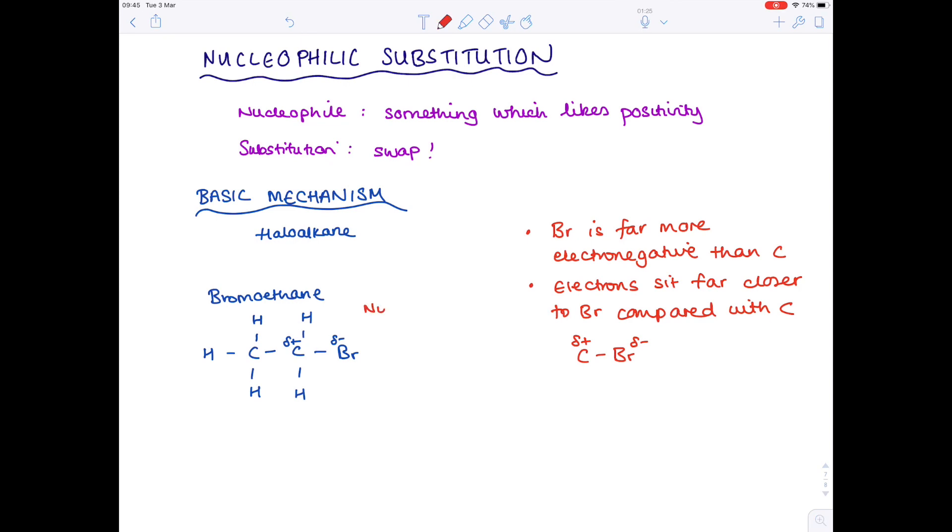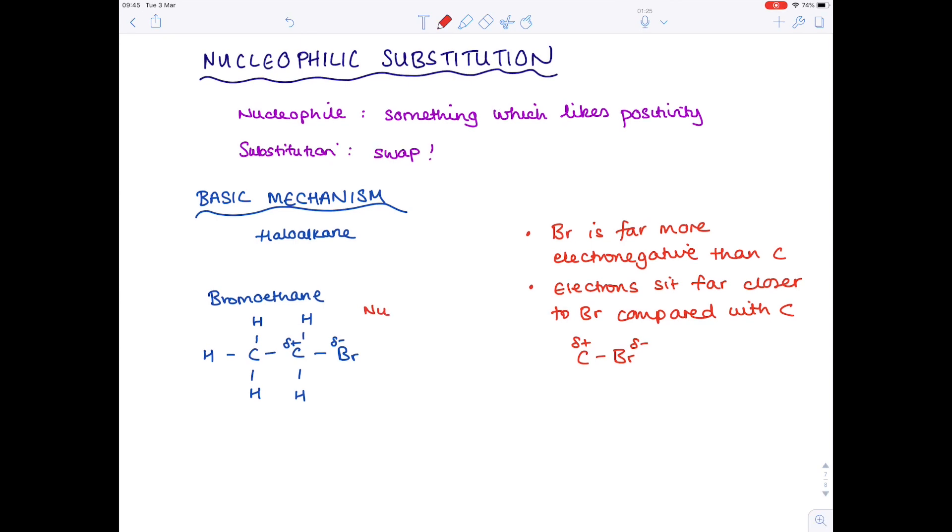So here's a generic nucleophile, haven't named which one, has a lone pair as always, and that's going to attack with a curly arrow at the carbon. And so because that slightly positive carbon accepts the lone pair from the nucleophile, what is the nucleophile acting as? Well, it's acting as an electron pair donor, and that's actually its official definition. A nucleophile is an electron pair donor.